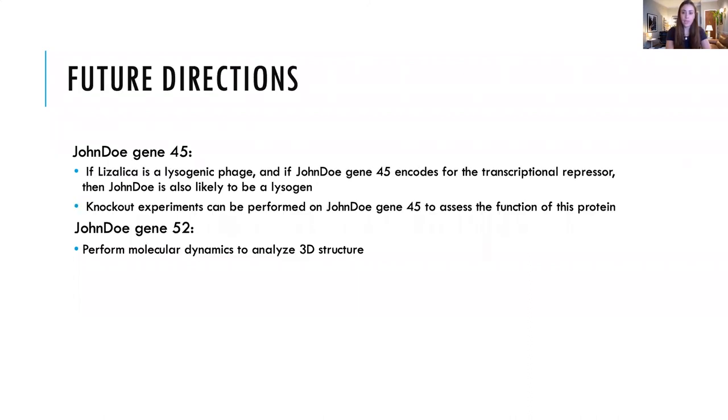In terms of future directions, we plan on performing further investigations on whether John Doe gene 45 encodes for a transcriptional repressor. More specifically, given that this gene is conserved in 12 of the AZ phages, we aim to incorporate the genome of John Doe into a plasmid, followed by the removal of gene 45, and transfect this gene along with the wild type into arthrobacter globoformis to assess the possibility of lysogeny. More specifically, if lysogeny is not achieved when gene 45 is knocked out, then it is likely that gene 45 functions as a transcriptional repressor.